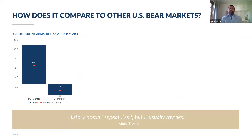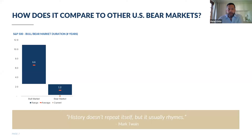The first stat I want to take you through is the duration of these bull and bear markets. The dark blue bar on the left-hand side represents bull markets over the last 40 years in the US — they've ranged from about two and a half years for the shortest to 11 years for the longest, which is the one we've just come through that ended in mid-February. On average, markets tend to go up for about six and a half years. Bear markets, shown in the right-hand bar, tend to last much less time — on average just over a year.